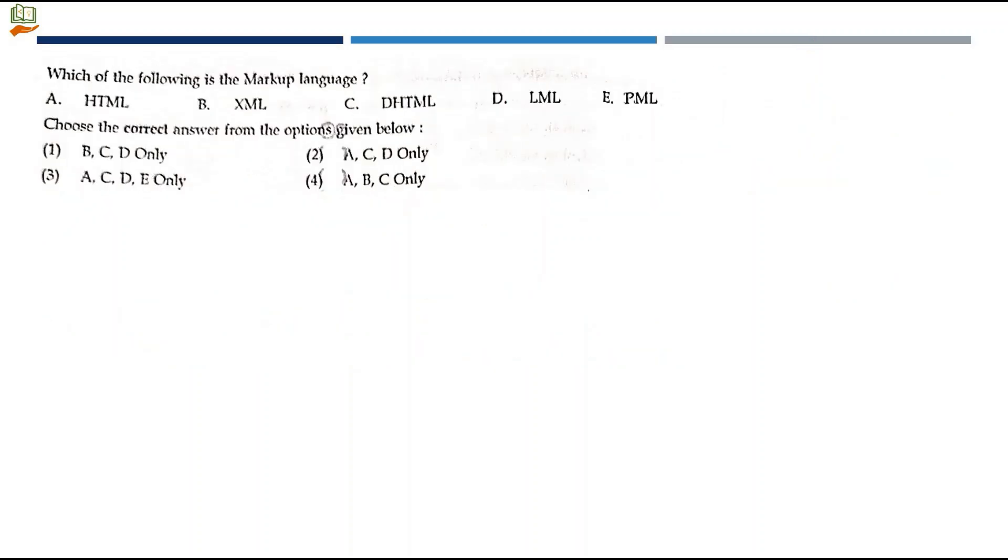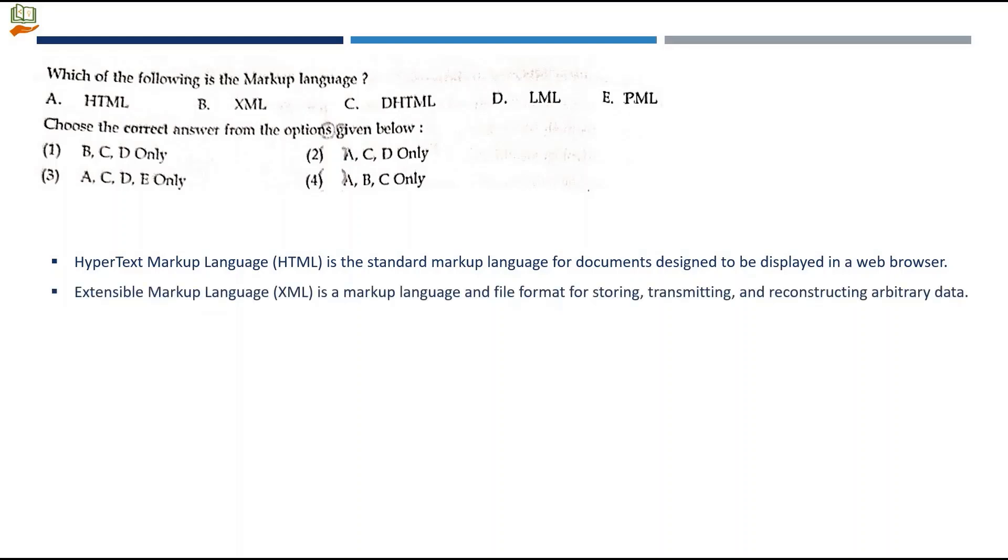Next question: which of the following is the markup language? Markup language is when you use tag-like structures to write some article or document for the web. Hypertext markup language HTML is the standard markup language for documents designed to be displayed in a web browser. Extensible markup language XML is a markup language for storing, transmitting, and reconstructing arbitrary data. When HTML is for display purpose, XML carries data between documents.